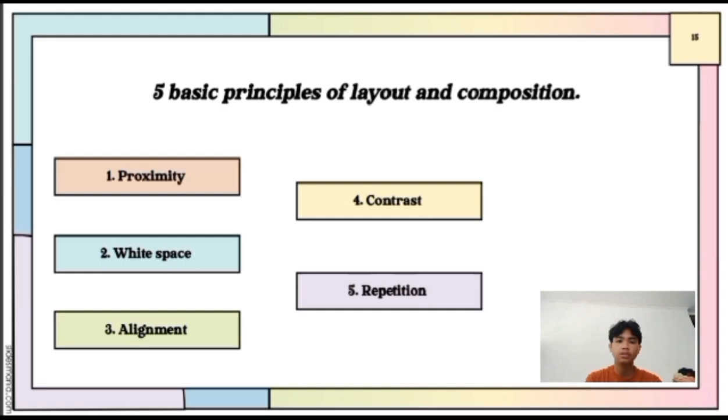The second one is white space, which refers to the empty areas between lines, paragraphs, and elements in a design. There are two types of white spaces. The first one is micro white space, which means mini spaces between paragraphs. And the second one is macro white space, which means large spaces between contents and elements.